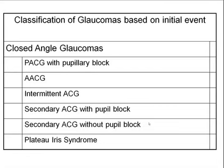Angle closure glaucomas can also be classified based on a clinical event. These include primary angle closure glaucoma with pupillary block — the most common type seen in the clinic — acute angle closure glaucoma, intermittent angle closure glaucoma, secondary angle closure glaucoma with and without pupillary block, and plateau iris syndrome. Pupillary block is where there's a blockage of aqueous flow through the pupil, so it gets trapped in the posterior chamber, causing iris bombé, which closes off the meshwork.